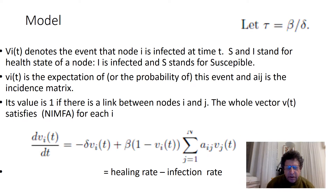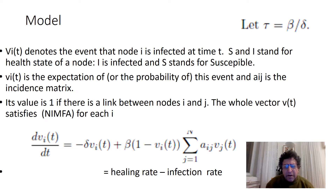The infection rate is proportional to the probability that node i is not contaminated, times the sum of indicators A_ij — that is one for j being a neighbor of i — times the probability that node j is infected. This is the NIMFA approximation.